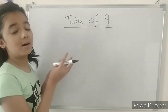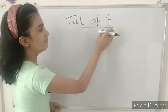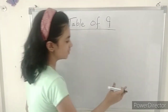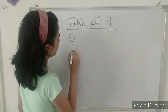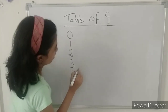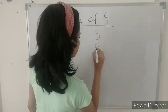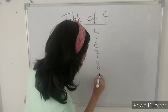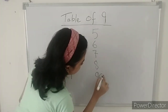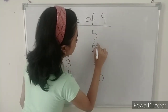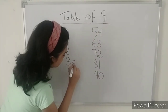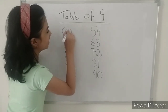Now we are going to learn the trick for learning the table of 9. For this, first we need to write the counting from 0 to 9, and then we will write the backwards counting from here.